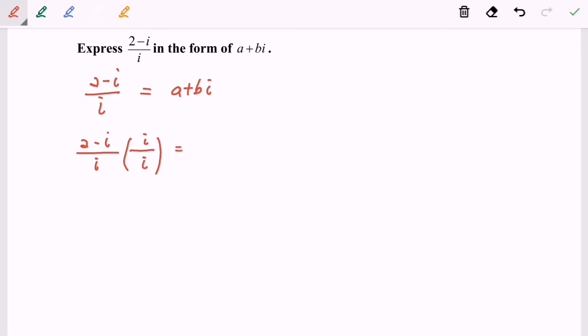So now we have to expand: 2i minus i squared. As we all know, i squared actually equals to negative 1, so over i squared. So we have 2i minus negative 1 over negative 1.